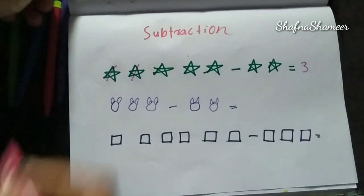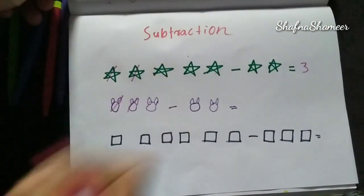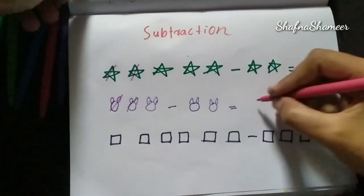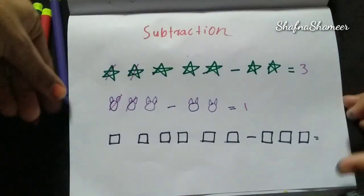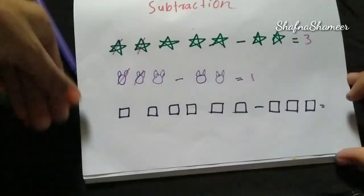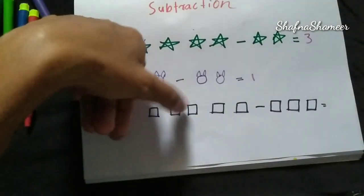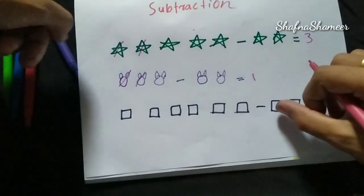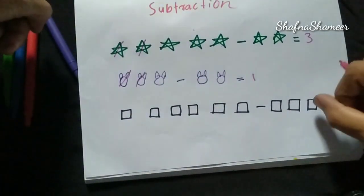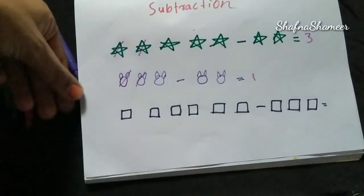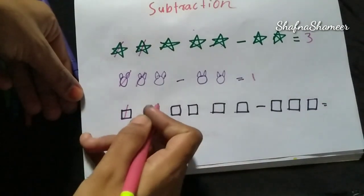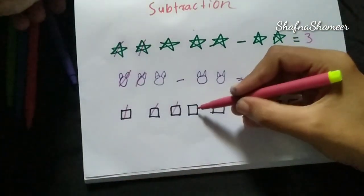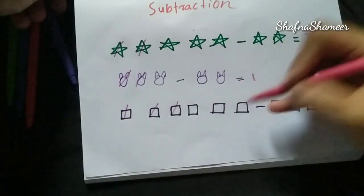1, 2, 3 — balance is 1. Then 1, 2, 3, 4, 5, 6 — balance 1, 2, 3.